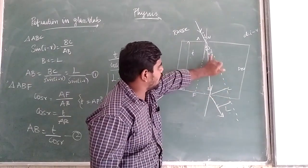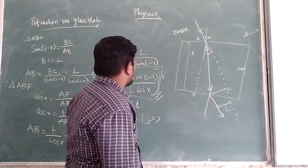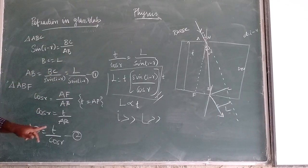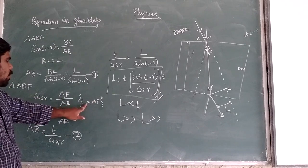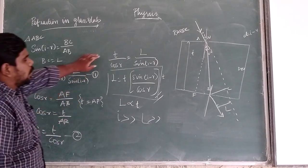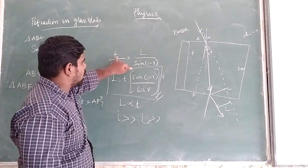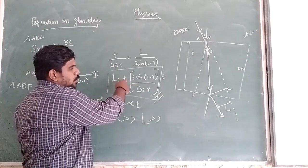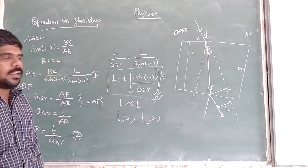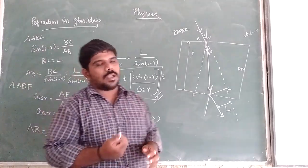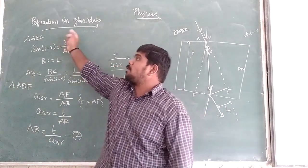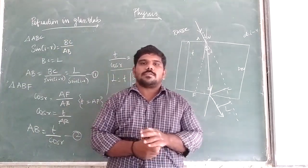To summarize: from triangle ABC, sin(I − R) = BC/AB, so AB = L/sin(I − R). From the second triangle, cos(R) = T/AB, giving AB = T/cos(R). Equating these: L = T × sin(I − R)/cos(R). The lateral displacement is directly proportional to the thickness of the glass slab. In this session we covered optical fiber — including the acceptance angle and numerical aperture — and refraction in a glass slab. These are important topics to learn.